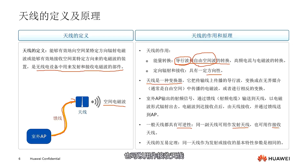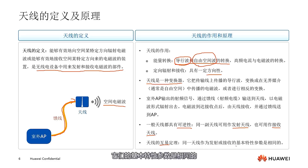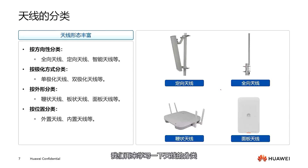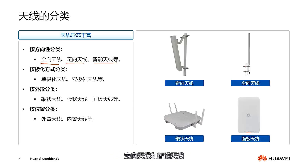An antenna possesses three properties. One is directionality, as shown in the three images discussed earlier. Another is reversibility, meaning the same antenna can be used both as a transmitting and a receiving antenna. The last is reciprocity, which means the same antenna has the same basic characteristic parameters whether used as a transmitting or receiving antenna.